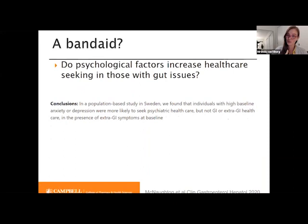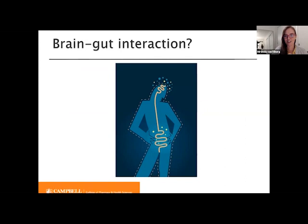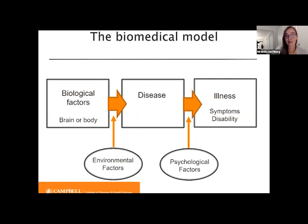Psychological factors have also been thought to influence not maybe directly gut symptoms, but definitely how we deal with the disorder. A 2020 study out of Sweden showed that if you have anxiety or depression, yes, you're more likely to seek healthcare, but not specifically GI healthcare. This brings me back to that brain-gut interaction — what are we really proposing? We're proposing the brain influences the gut, or how we respond to gut symptoms. Believe it or not, that is not the biopsychosocial model — it is the biomedical model, because the biomedical model actually allows for psychological influences on GI diseases. In the biomedical model, we propose it's either the brain or the body that influences the disease.